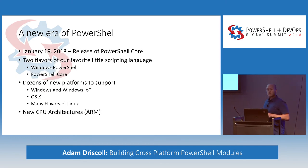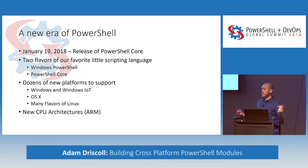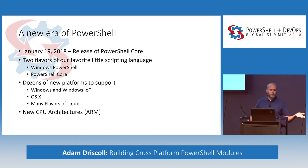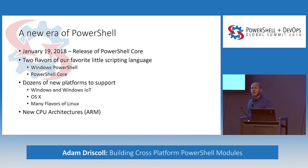A little history of PowerShell Core: the first official version was released on January 19th of this year. Now we have two flavors of our favorite scripting language - Windows PowerShell and PowerShell Core. There are dozens of new platforms to support: Windows, Windows IoT, OSX, all those different flavors of Linux, and it also runs on ARM. I've actually had it running on my Raspberry Pi.